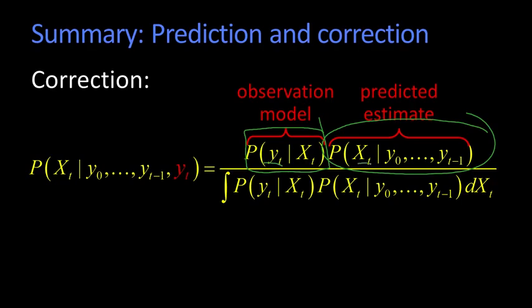This observation model says, well, if you really were at some particular point, what's the likelihood of getting the measurement you just saw? And by using Bayes' rule, we use that to turn that into a prediction of xt given everything we saw including, that's why it's in red, the new measurement. And then, like I said, on the bottom here is just the normalization.